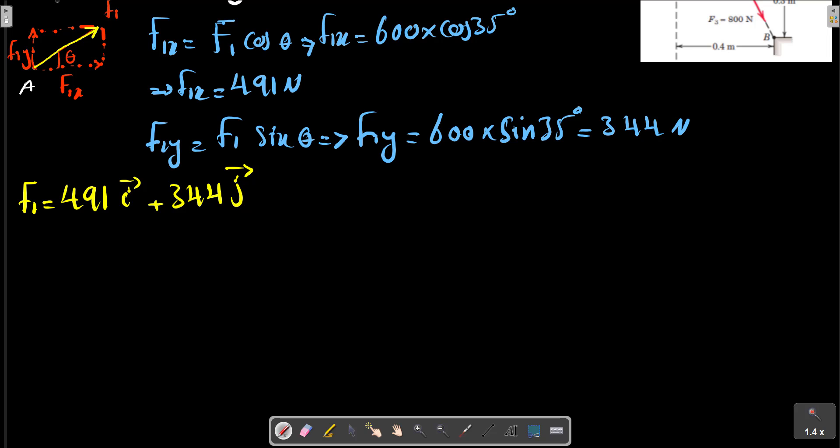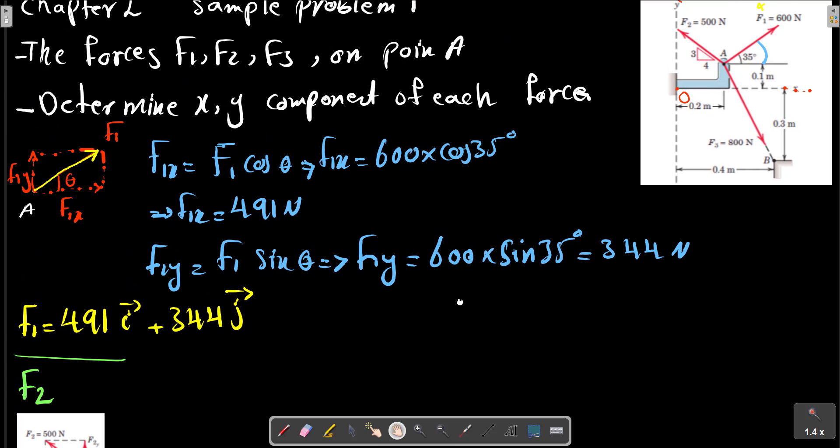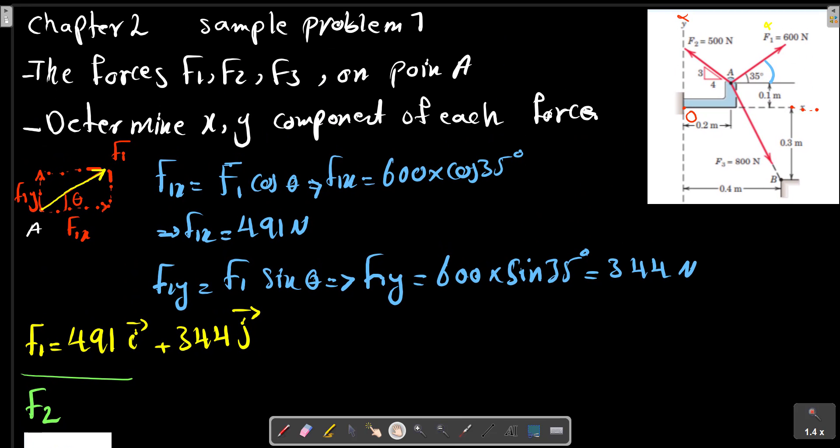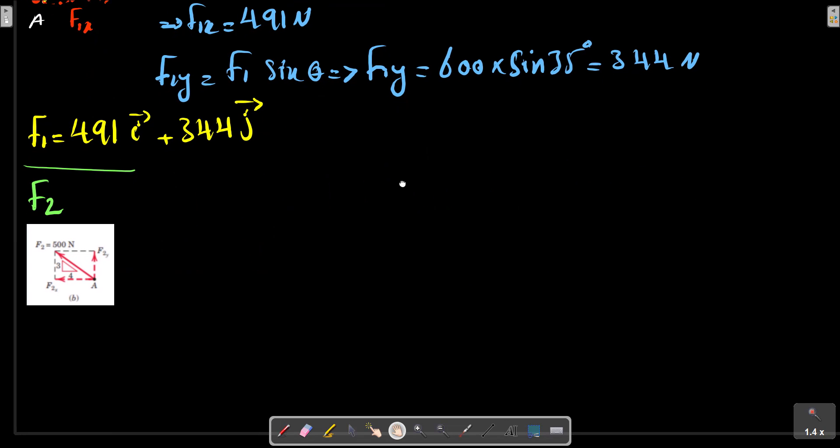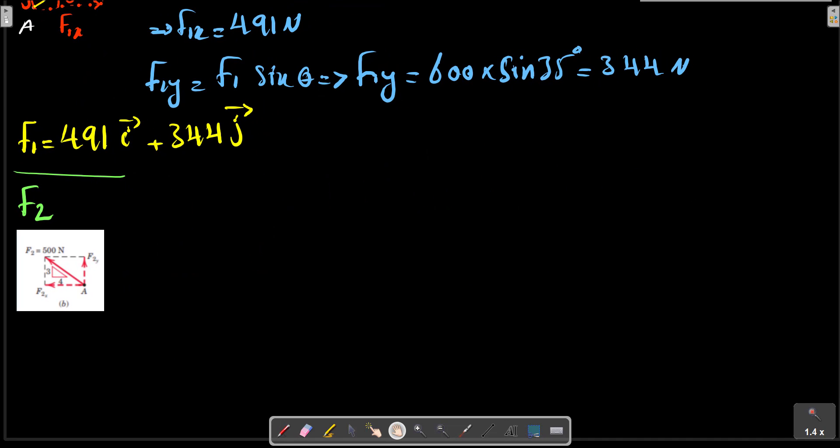For F1 and F2. For F2 we have this type of diagram according to this picture. F2 in this direction, so the free body diagram for F2 can be shown as this picture.